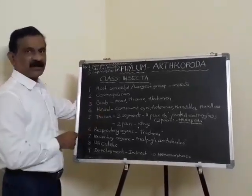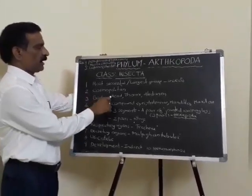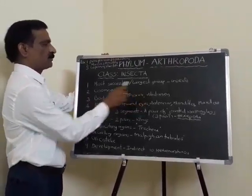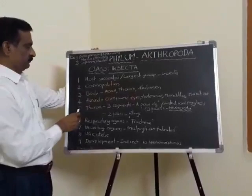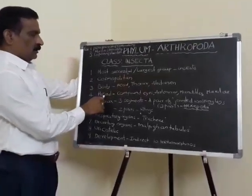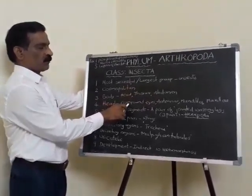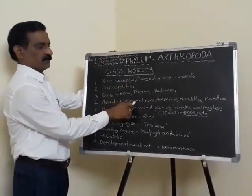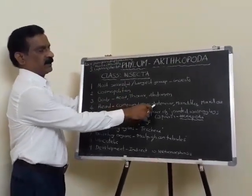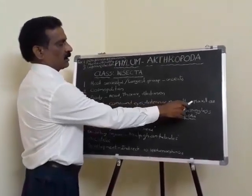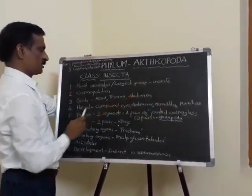The body is divided into head, thorax, and abdomen. The head bears compound eyes, antennae, mandibles, and maxillae.